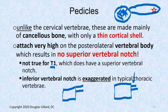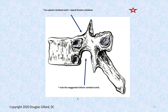Because the pedicle is attached up high, the inferior vertebral notch is huge — quite exaggerated in the typical thoracic spine. The superior bony end plate morphs right into the pedicle, which morphs right into the superior articular process. There's no notch, and the whole pedicle is attached up high, giving us this huge inferior vertebral notch.